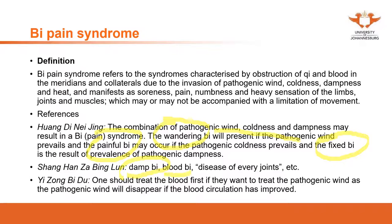Shang Han Za Bing Lun by Dr. Zhang Zhongjing describes different kinds of Bi syndrome: damp Bi, blood Bi, and disease of every joint. It describes that the cause of this Bi syndrome is dampness. Blood Bi — the pain is due to blood stasis. When we say blood stasis from the diagnostics and basic theory, we may have the assumption that the patient may present with blood stasis signs such as purple tongue, purple lips, or for ladies, menstruation may present as dark red color with clots. The pain in blood stasis will be in a fixed area and can be a stabbing pain.